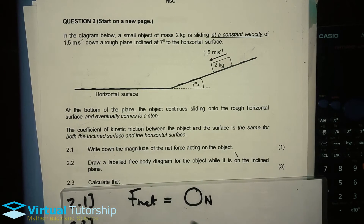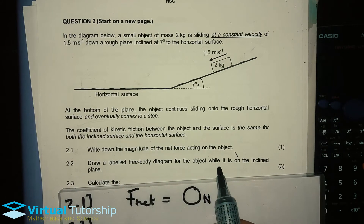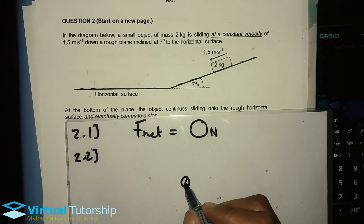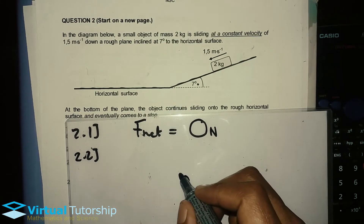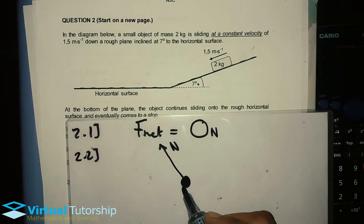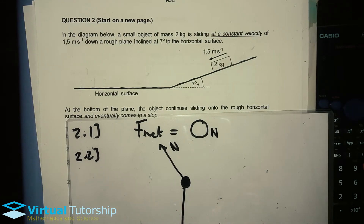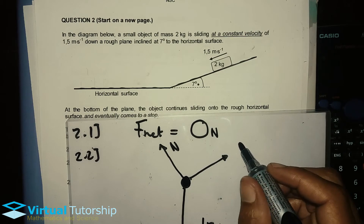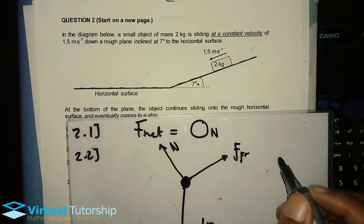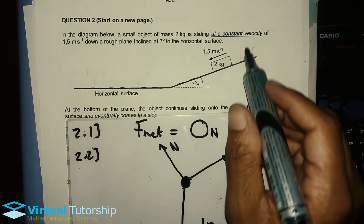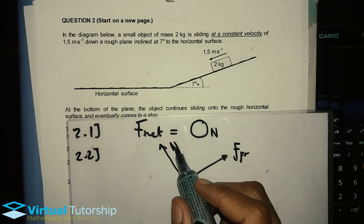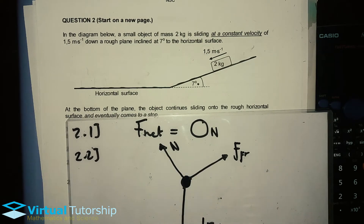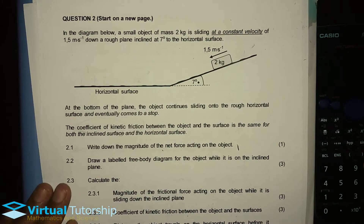2.2: Draw a labeled free body diagram for the object while it is on the inclined plane. The object on the inclined plane has the weight — F_g — as well as the frictional force, since it slides down a rough plane. There is also the force perpendicular to the surface: the normal force, as well as the weight component.